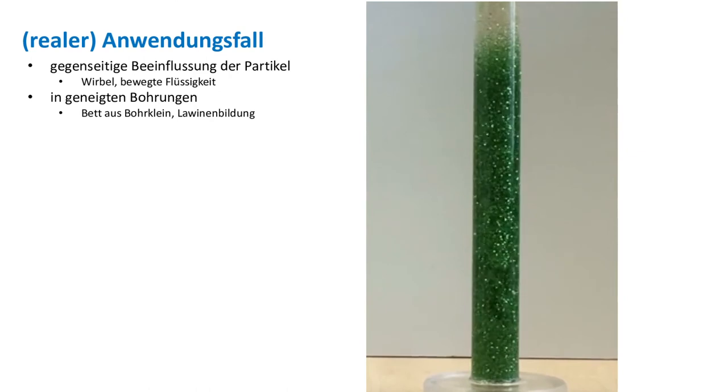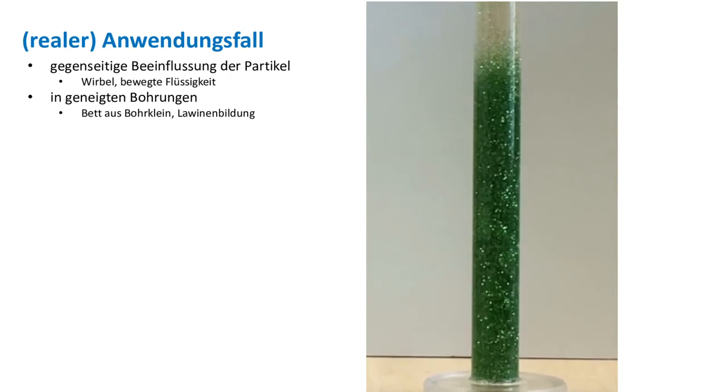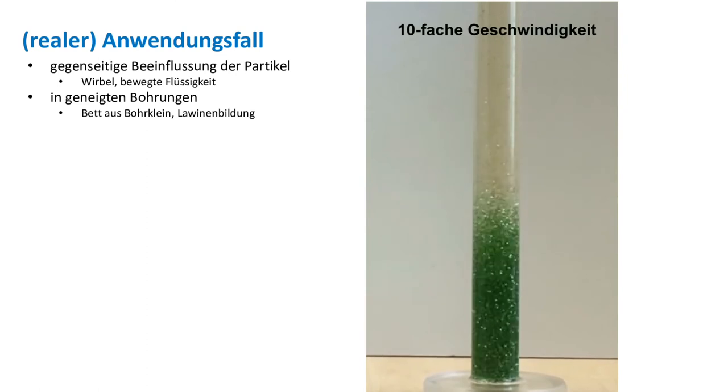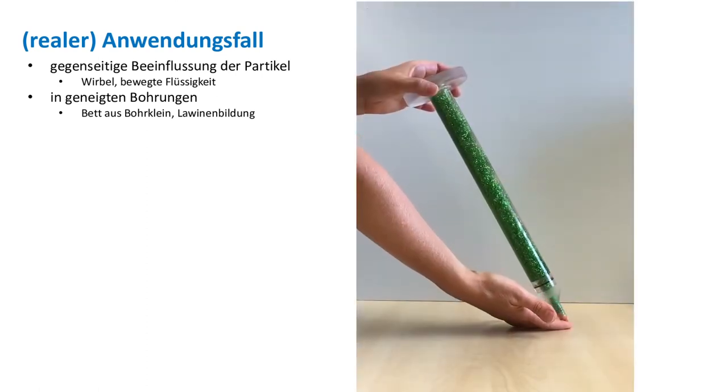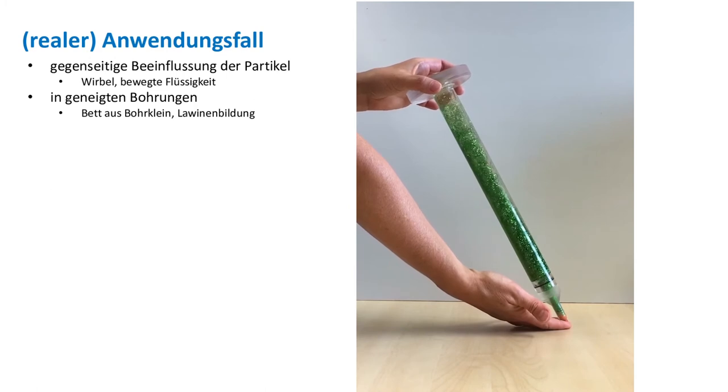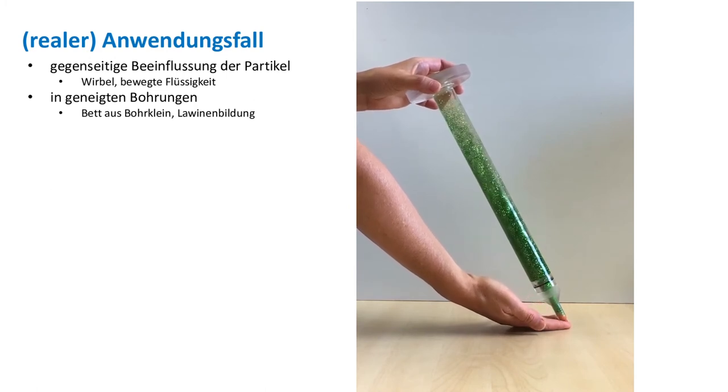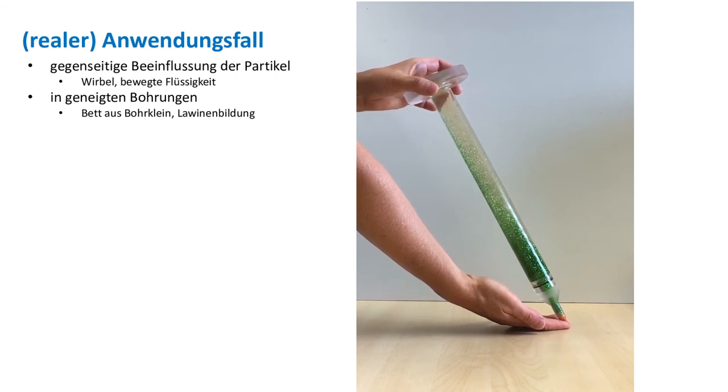But most of the wells drilled today are deviated or even horizontal. Here we find a completely different effect. In deviated wells, we can observe effects similar to snowslides in the mountains. The cuttings fall to the low side of the borehole and build cutting beds.